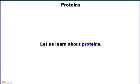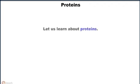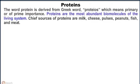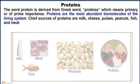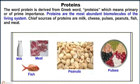Let us learn about proteins. The word protein is derived from the Greek word proteos, which means primary or of prime importance. Proteins are the most abundant biomolecules of the living system.